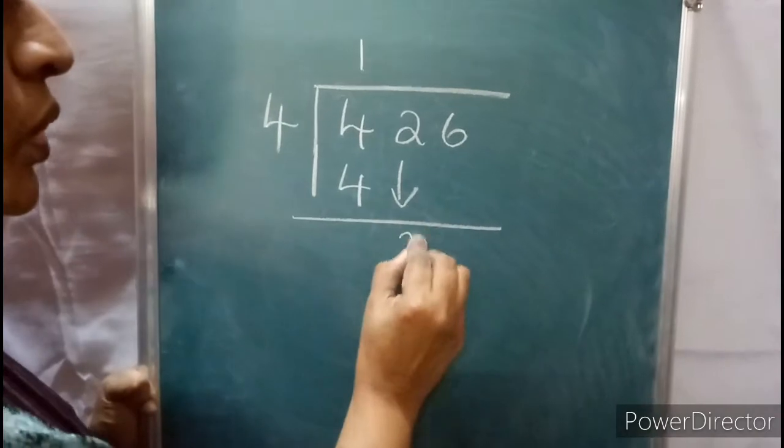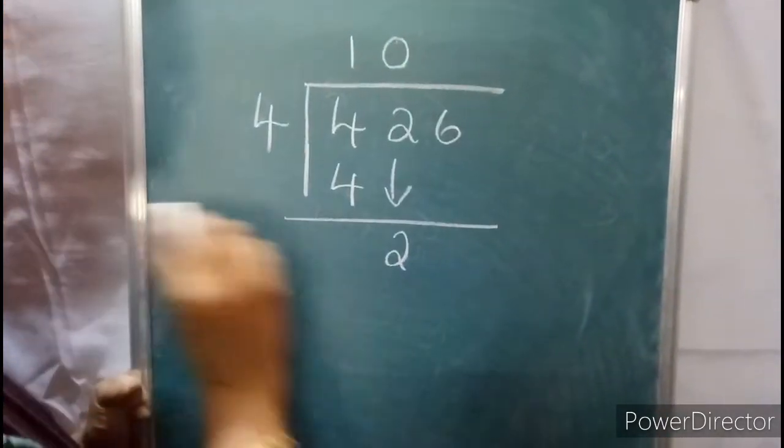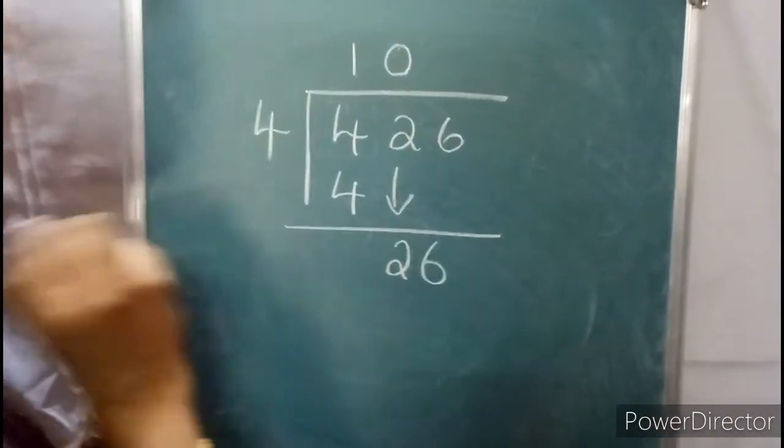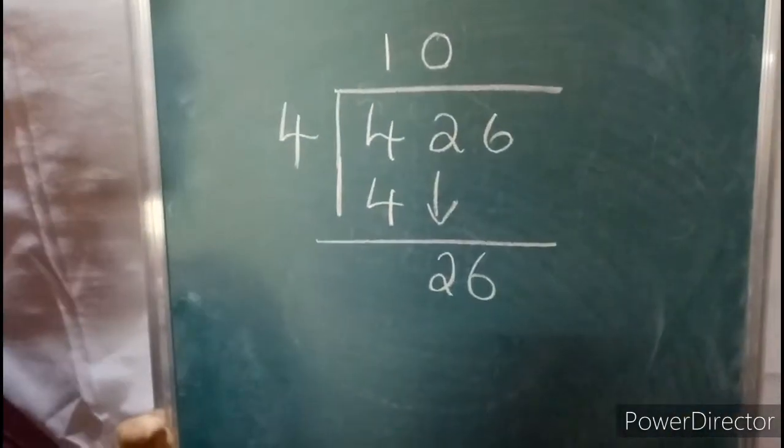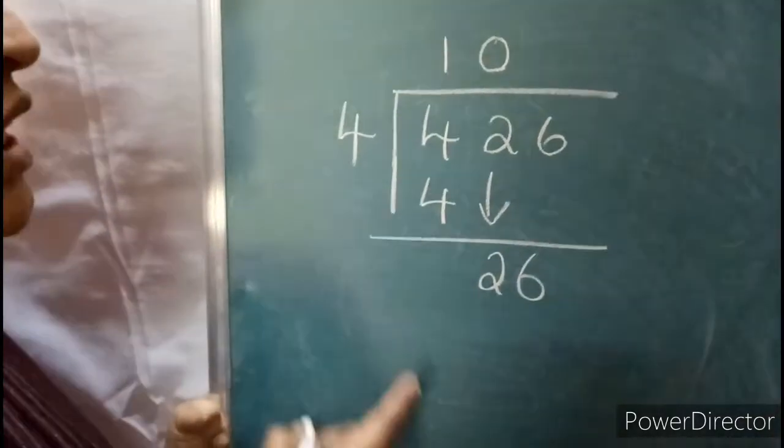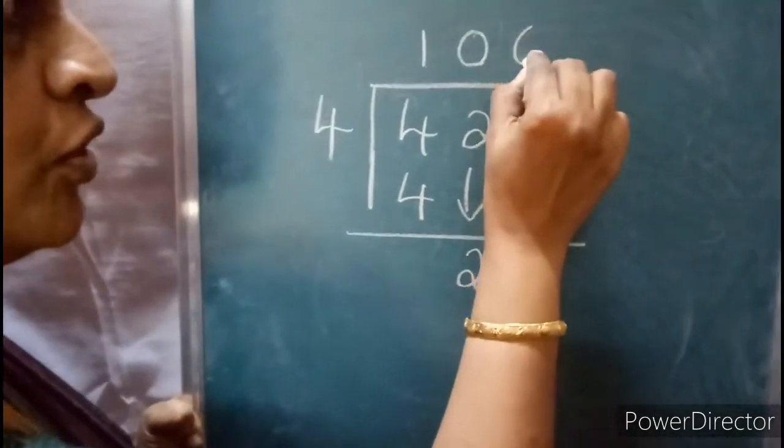2 is less than 4, so put a 0 here. Now take this 6. In the 4 table: 4 ones are 4, 4 twos are 8, 4 threes are 12, 4 fours are 16, 4 fives are 20, 4 sixes are 24.